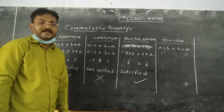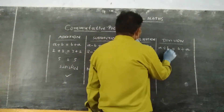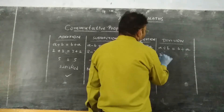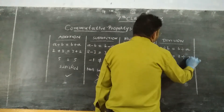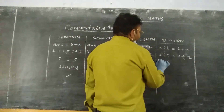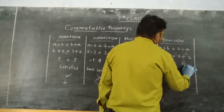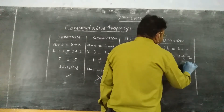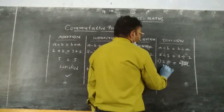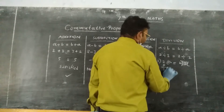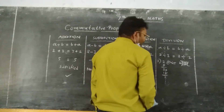Now, commutative property under division. Taking 2 divided by 3 equal to 3 divided by 2. When we compute 2 divided by 3, the division goes on as a long division — this division is going on forever, giving a recurring decimal.